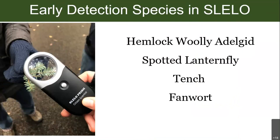We are currently strengthening early detection efforts for four priority species: hemlock woolly adelgid, spotted lanternfly, fanwort, and tench. These species have either not been detected in our region but have a high spread potential, or they are present in low enough abundance on the invasion curve to suppress or possibly eradicate. I'd like to note that emerald ash borer was one of our early detection species, but since it is now considered established in the SLILO region, efforts have shifted from early detection to suppression and control management strategy.